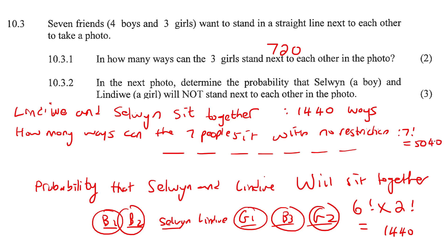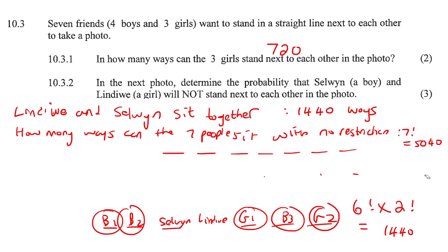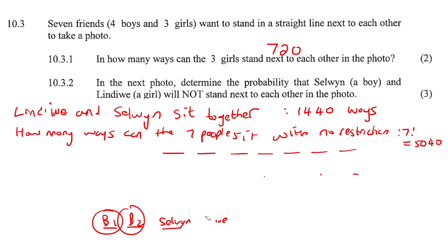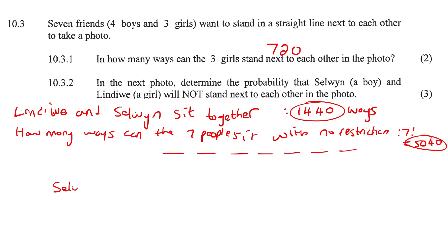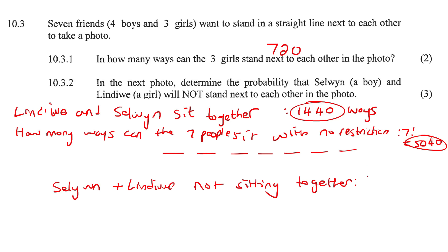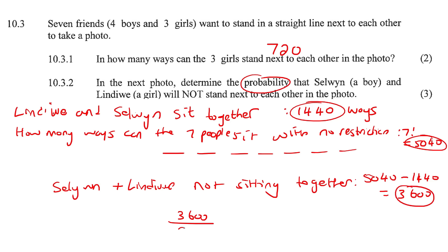How many ways can Selwyn and Lindiwe not sit next to each other? Simply subtract: 5,040 minus 1,440 equals 3,600. Probability is the outcome we're looking for divided by the total, which is 5,040. That gives 5 over 7. There is a five out of seven chance that they will not stand next to each other.